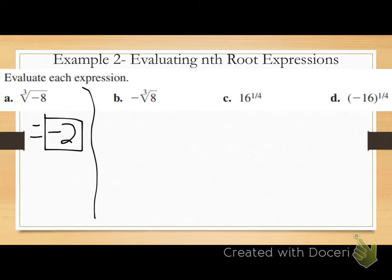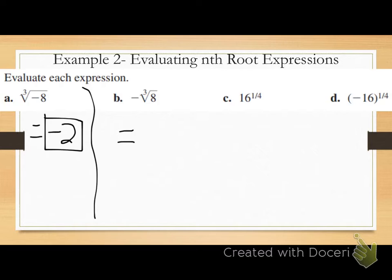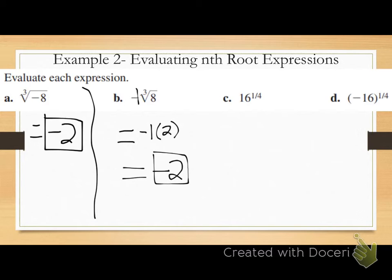Letter B: I have the negative cube root of 8. I'll ignore the negative sign for now and do the cube root of 8. Index is 3 — odd — so one real nth root. What number to the third power gives me 8? Two. Now I handle the negative outside the radical: that's negative 1 times the cube root of 8, which is negative 1 times 2, giving negative 2. So the answer is negative 2.